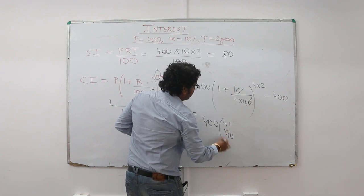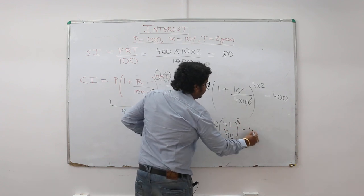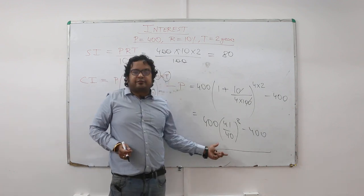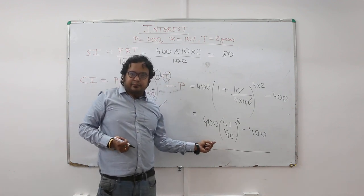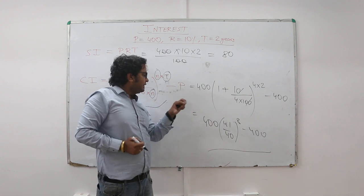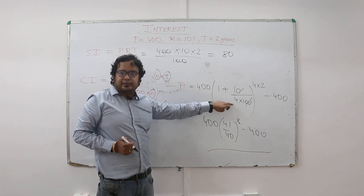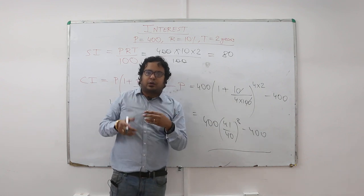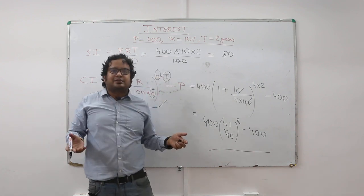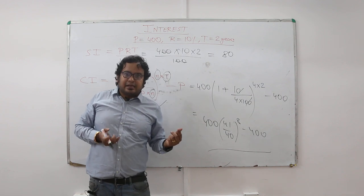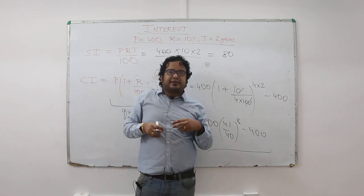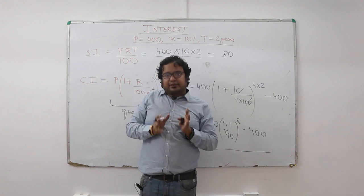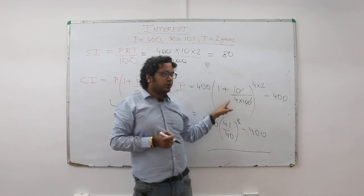Now this is something you can use the calculator and find easily in the CAT exam. Now the point is, why dividing by 4 here? 10% is the annual rate of return. If you are compounding it quarterly, you won't get 10% after 3 months, that is simple logic. After 3 months, the rate that will apply is 10 by 4. Annual rate of return is 10%, so the quarterly rate of return will be 10 by 4. Number of years is 2. If you are compounding 4 times a year, number of times compounding is done becomes 4 into 2, which is 8.